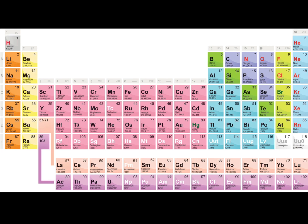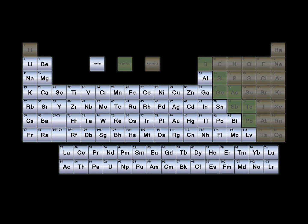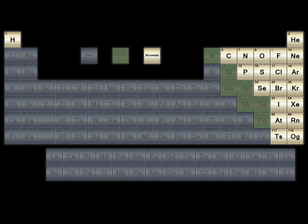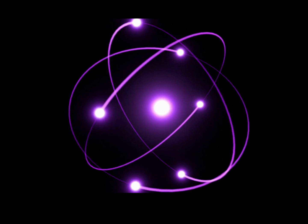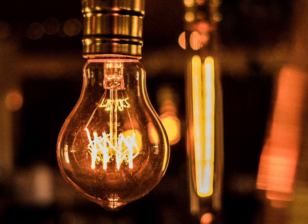The periodic table contains three main classes of elements: metals, non-metals, and metalloids. Each class of elements can be found in a specific area on the periodic table.